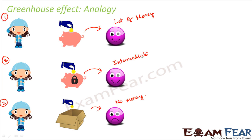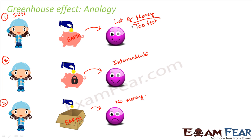Now let us apply this analogy to the greenhouse effect. Here, you are not you but the sun — the source of all radiation. The piggy bank or the box represents the earth. In the first scenario, the sun gives its radiation and it enters inside the earth, but there is no option by which radiation can come out because there is no lock and key. So in this case, the earth will become too hot — the temperature on the earth will become very, very high because radiation is only entering and there is no way it can come out.